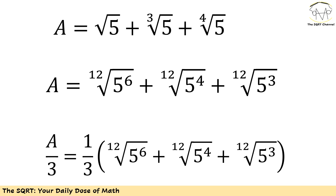Let's start by using a common root for everything. Between 2, 3, and 4, I'm going to take 12 as the LCM. I'll rewrite radical 5 as the 12th root of 5 to the power of 6, the third root of 5 as the 12th root of 5 to the power of 4, and the fourth root of 5 as the 12th root of 5 to the power of 3. Now let's divide everything by 3.